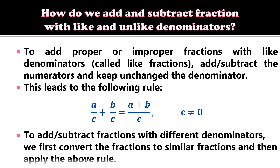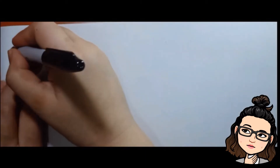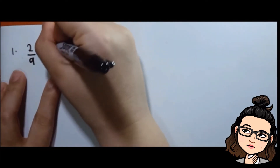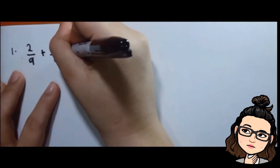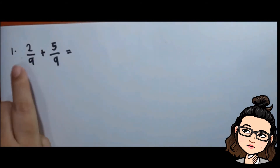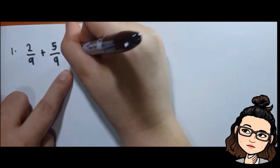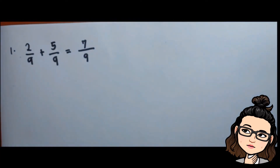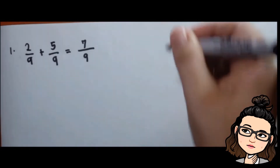To add or subtract fractions with different denominators, we first convert the fractions to similar fractions and then apply the same rule. For example: 2/9 + 5/9. Just add the numerators: two plus five is seven, and copy the denominator. So the answer is 7/9. Another example: 1/6 + 3/6. One plus three is four, copy the denominator to get 4/6, which simplifies to two-thirds.